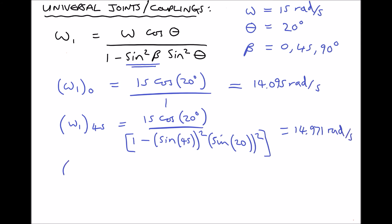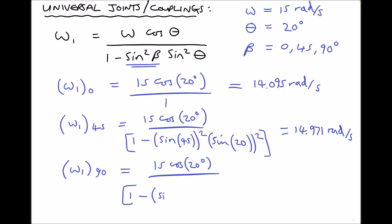Finally, calculating the angular velocity of the prop shaft when the input shaft is at 90 degrees: we have 15 cos(20°) divided by 1 minus sin²(90°) × sin²(20°), where 20 degrees is still the articulation angle in the second bracket. This gives us an answer of 15.963 rad/s.